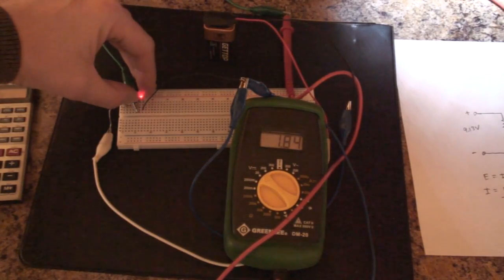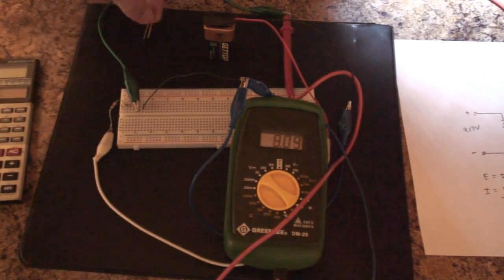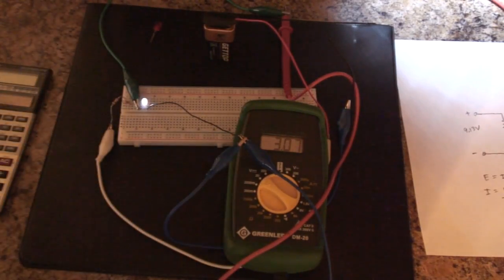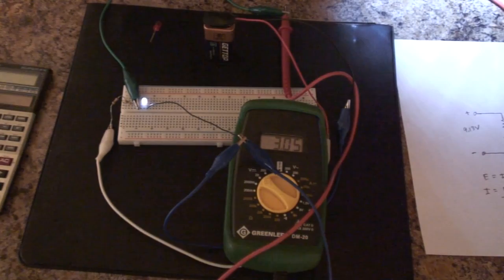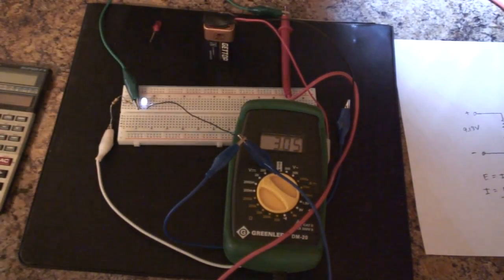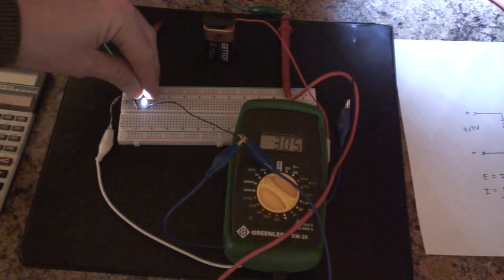So we can swap out this LED and test another one. Okay, so there's a white LED. The white LED has a much higher voltage, about 3.1 volts. So that would be the forward voltage of that LED.